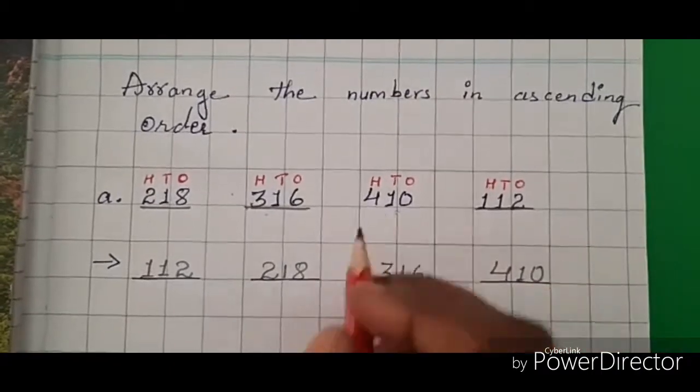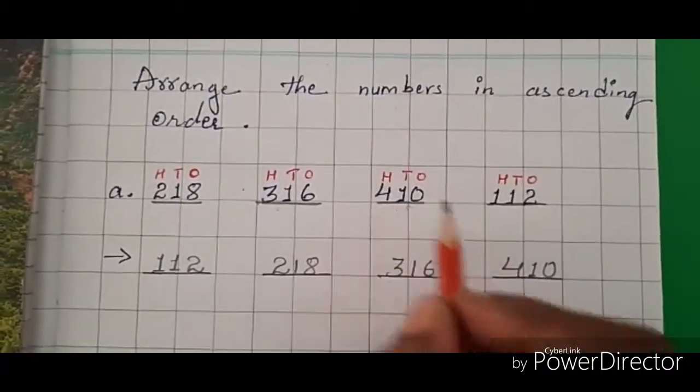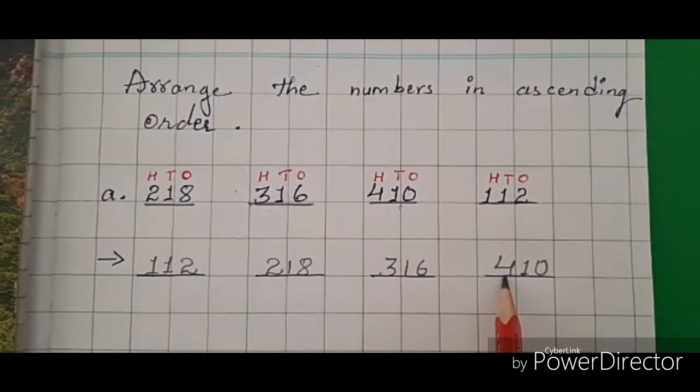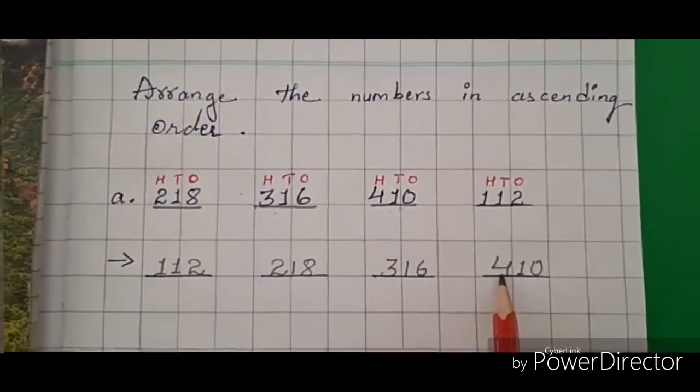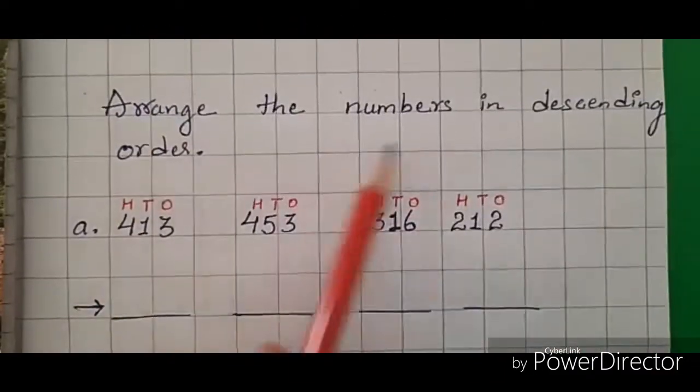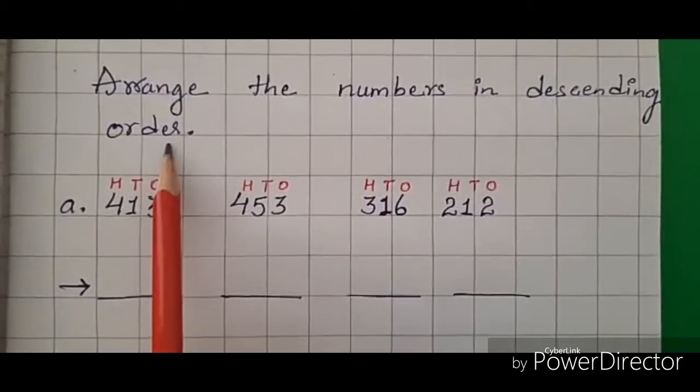Now let's solve the next question, that is descending order, from big number to small number. In this example, let's compare the numbers of hundreds place.